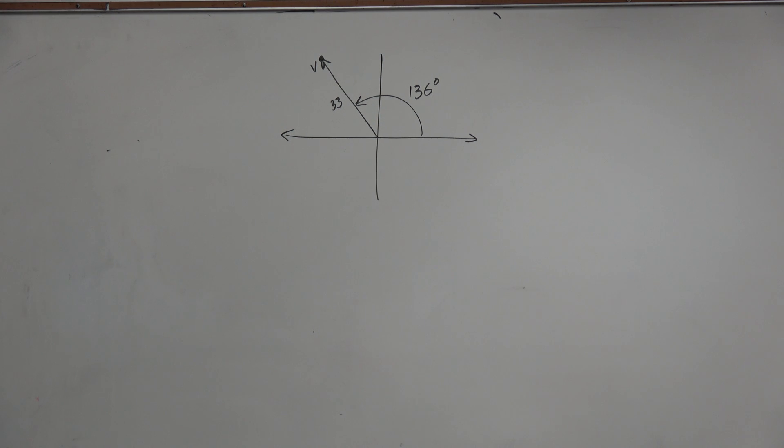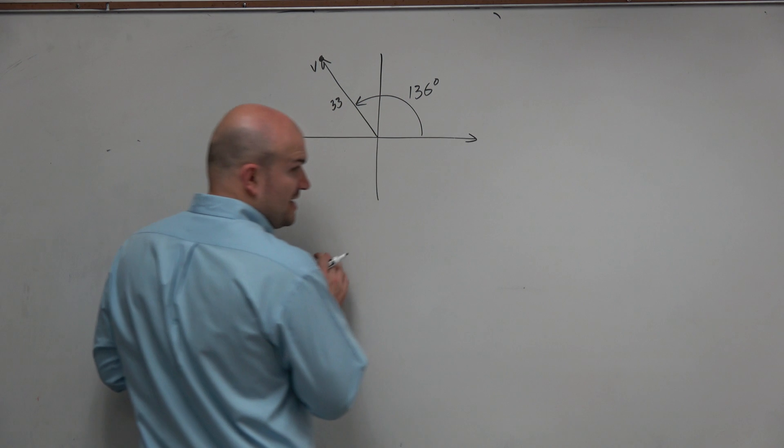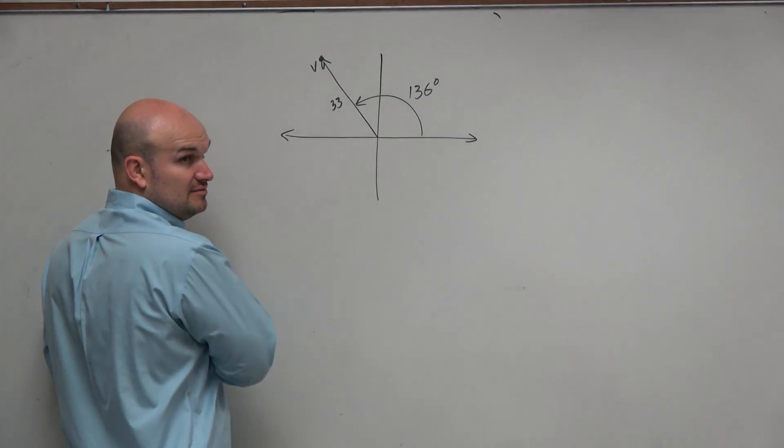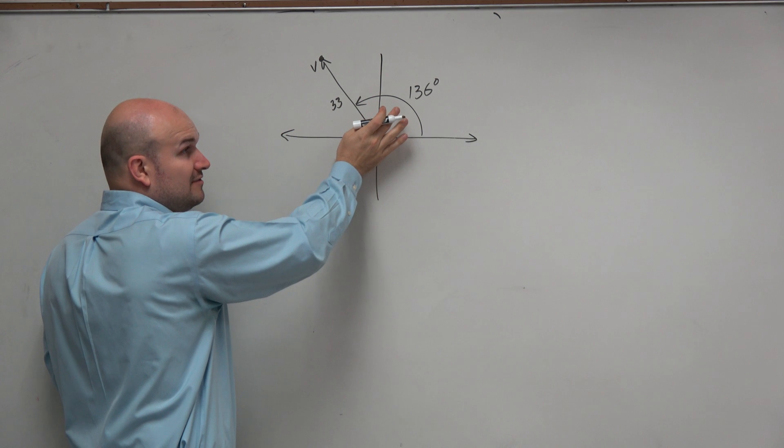So in this example, when we are looking at this, we need to understand a couple things we have. We have the vector, we have the magnitude, and we have the angle.